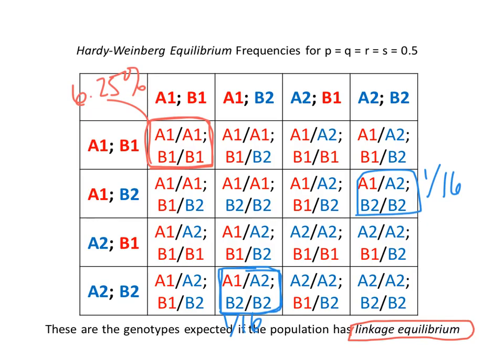Linkage disequilibrium usually means that evolution is happening — that there's some sort of selective process going on. It's boring if you measure allele frequencies and see what you expect; that means everything's happening the way Mendel would have predicted. You're in linkage equilibrium. It's more exciting when you measure allele frequencies and the genotypes don't match this Punnett square.